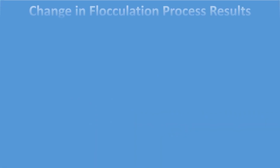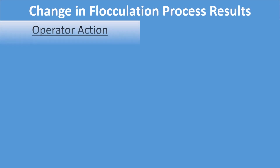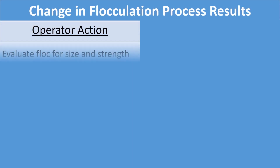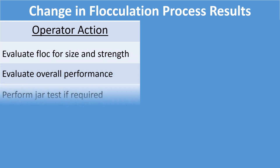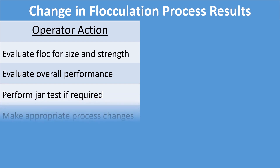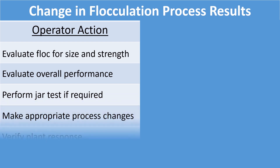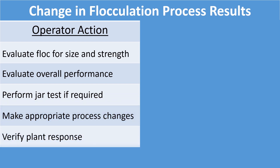Regarding operator actions if there is a change in flocculation process results: the operator needs to evaluate the floc for its size and strength, and this is primarily a visual inspection. Is the floc tight and large, or is it pin floc? Pin floc is not good for settling — you want large, tight floc. The operator should evaluate overall performance, perform a jar test if required, make appropriate changes, and then verify that the plant responded as expected.